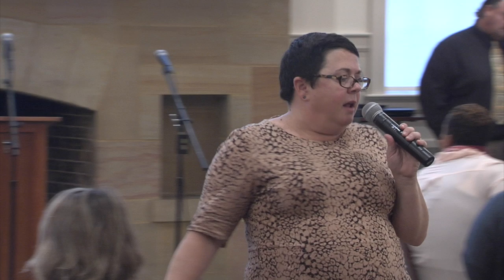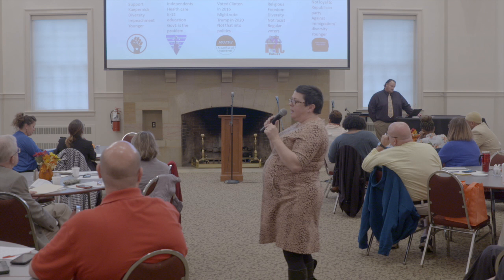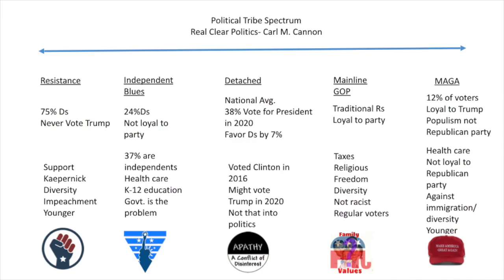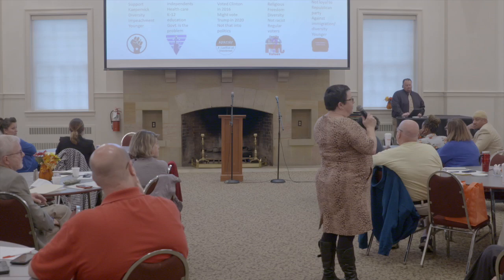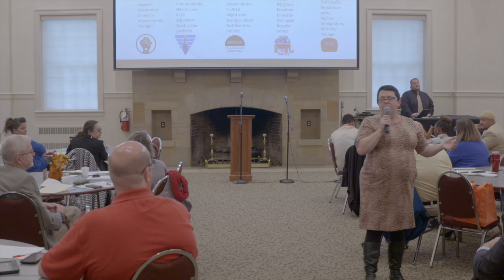He divides the American electorate into five tribes. If we look at 'the resistance,' they are 75% Democrats — they would never vote for Trump, they support Colin Kaepernick. These are your diehard Democrats, probably even further left than Democrats. I work with a group like this. If you don't agree with everything they say, they think you're a traitor. I have differing economic positions from them, and I see the 'I am better than you' attitude.